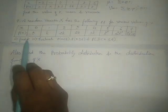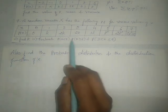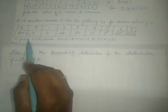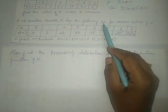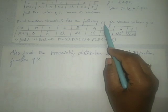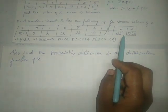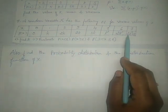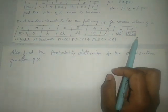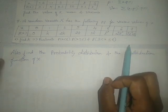First we have to find the value of K, then only we can solve all the sub-questions. Since it is a probability function, its characteristics are: each value must be greater than or equal to 0, and the sum of all values must be equal to 1. By using these properties we will find the value of K.